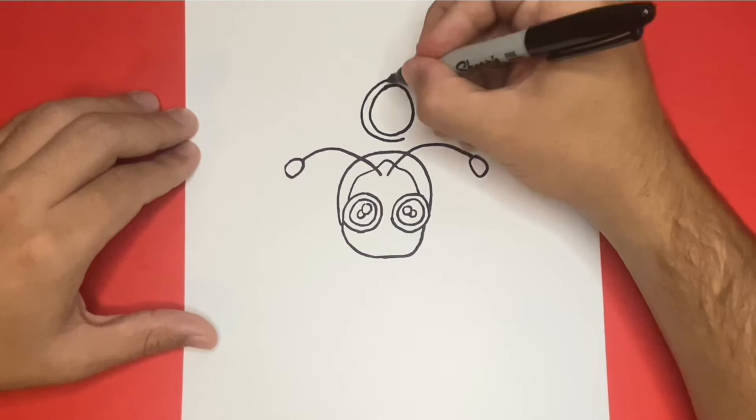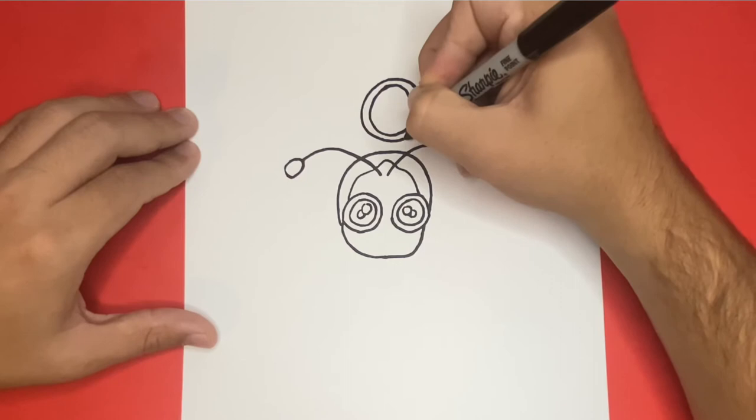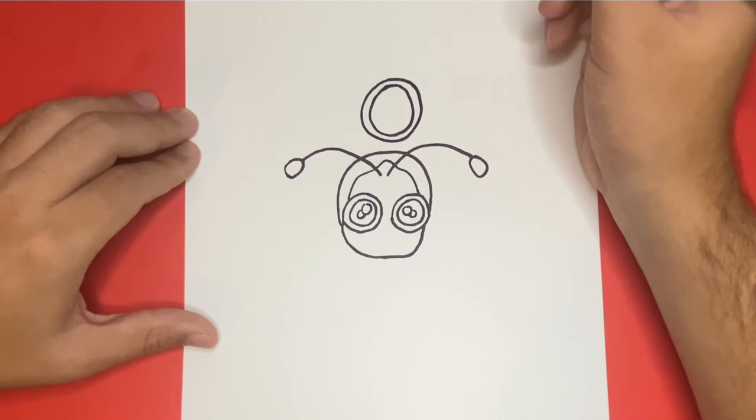Let's go ahead and draw one circle on the other side. And we will want to connect what we just drew to the head right below by using two small lines.